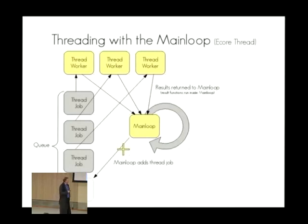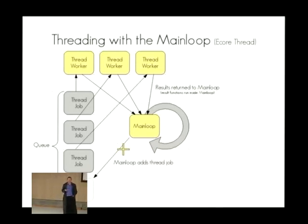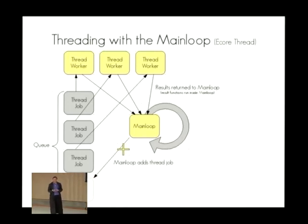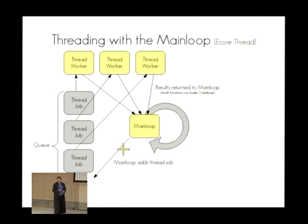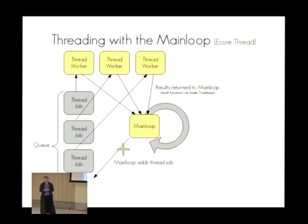If you want to use threads to offload stuff, it's really easy. EFL's eCore threads is basically a worker queue — very similar to macOS Grand Central Dispatch from an API point of view. All you do is put a job on a queue and worker threads go off and work on it. It will allocate as many worker threads as you have cores, so it tries not to overload your machine.